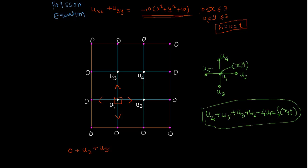Plus u3, plus u3, plus 0 minus 4u1 equals 1. This point is (1,1), so it goes to f(x,y), f(1,1).